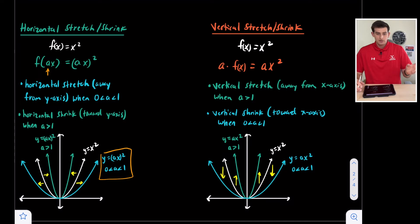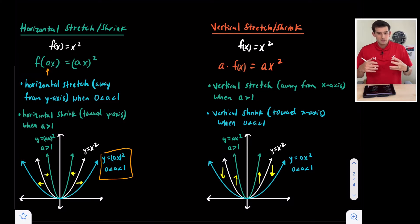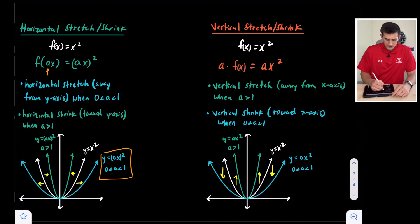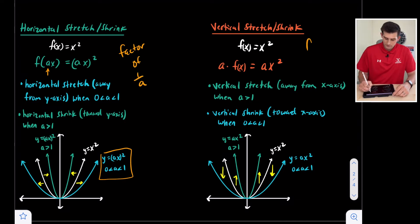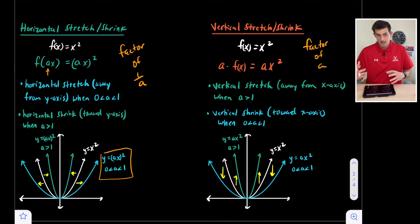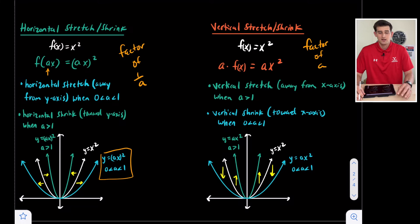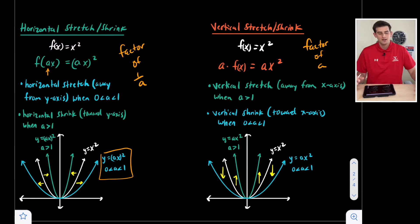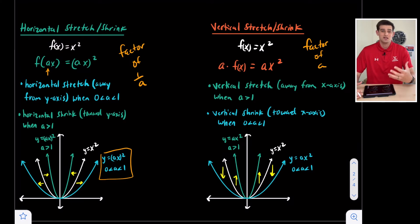A horizontal stretch occurs when a is between zero and one — it seems counterintuitive, but horizontal is opposite of what it looks like, just like horizontal translation. For horizontal, we say there's a stretch or shrink by a factor of one over a. So if a equals one half, the factor is one divided by one half, which is two — a horizontal stretch by a factor of two. For horizontal shrink, a is greater than one; if a is three, the factor is one third, which makes more sense as a shrink.